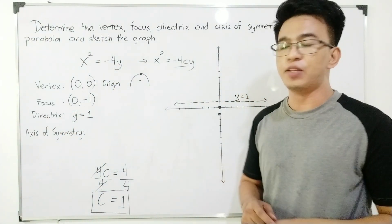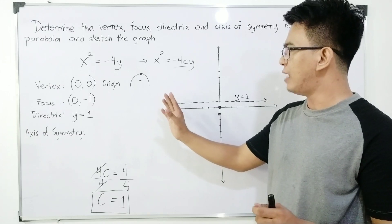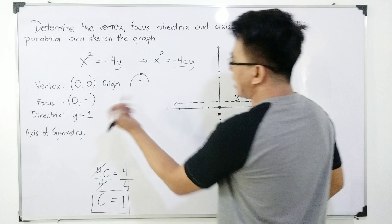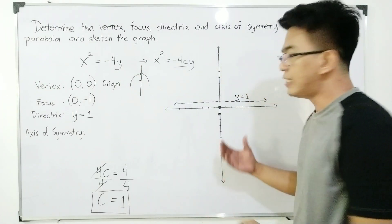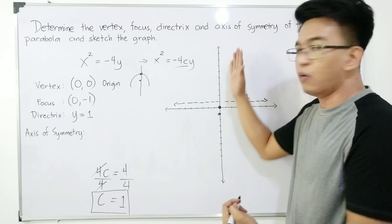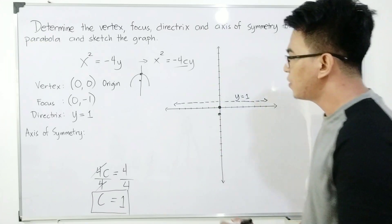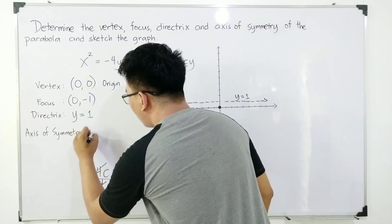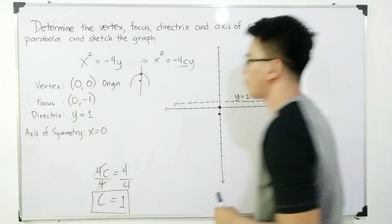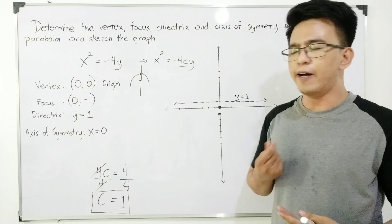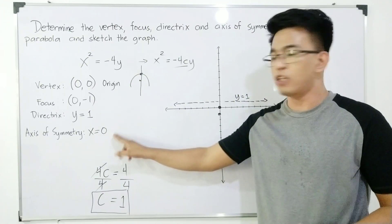As for the axis of symmetry: since the vertex of our parabola is at the origin, the axis of symmetry is perpendicular to the directrix and passes through the vertex. In our graph, the axis of symmetry is the y-axis, represented by the equation x is equal to 0.